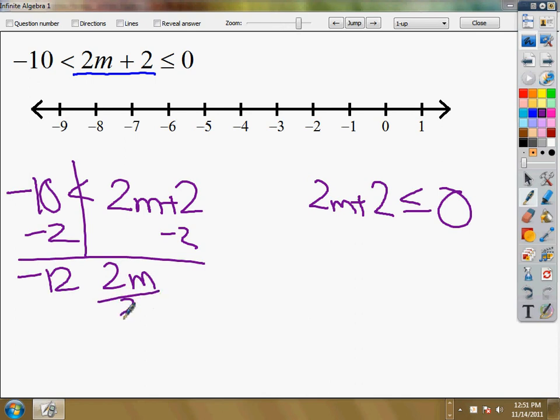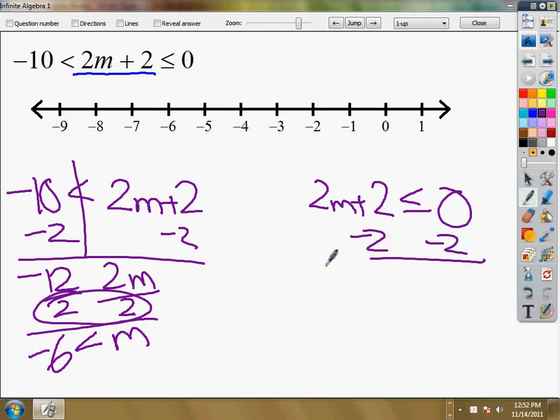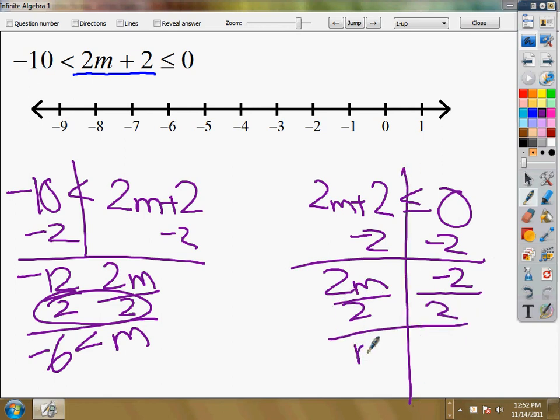So I have times 2 so I divide. m is greater than negative 6. This is a positive 2 I'm dividing by so I don't need to flip that thing over. Bring down negative 2 and divide by 2 here. There's the line I forgot to draw. Negative 2 divided by positive 2 gives you negative 1 and this stays as less than or equal to.